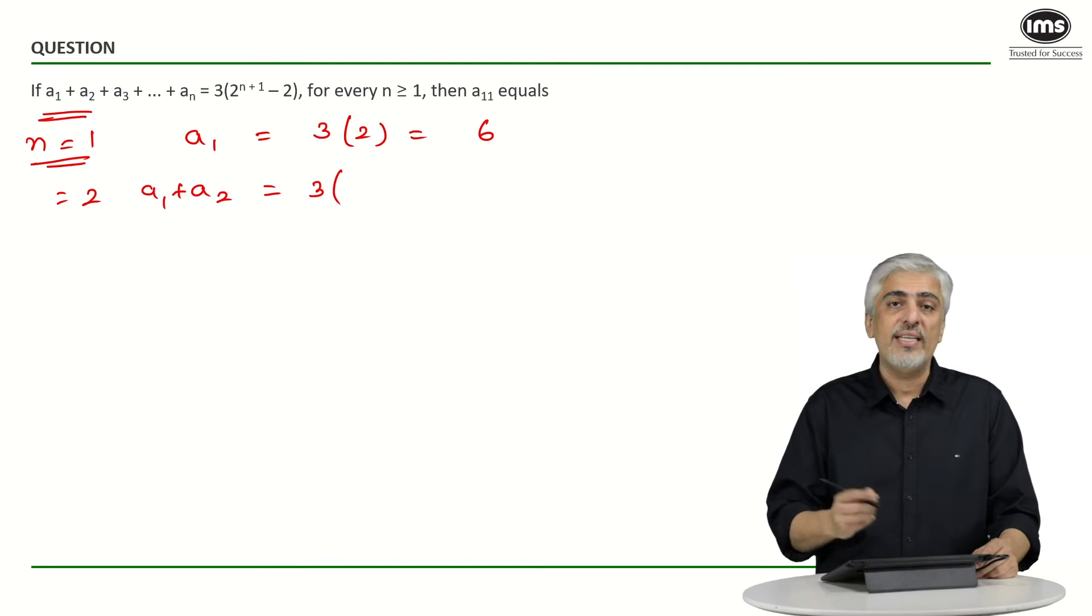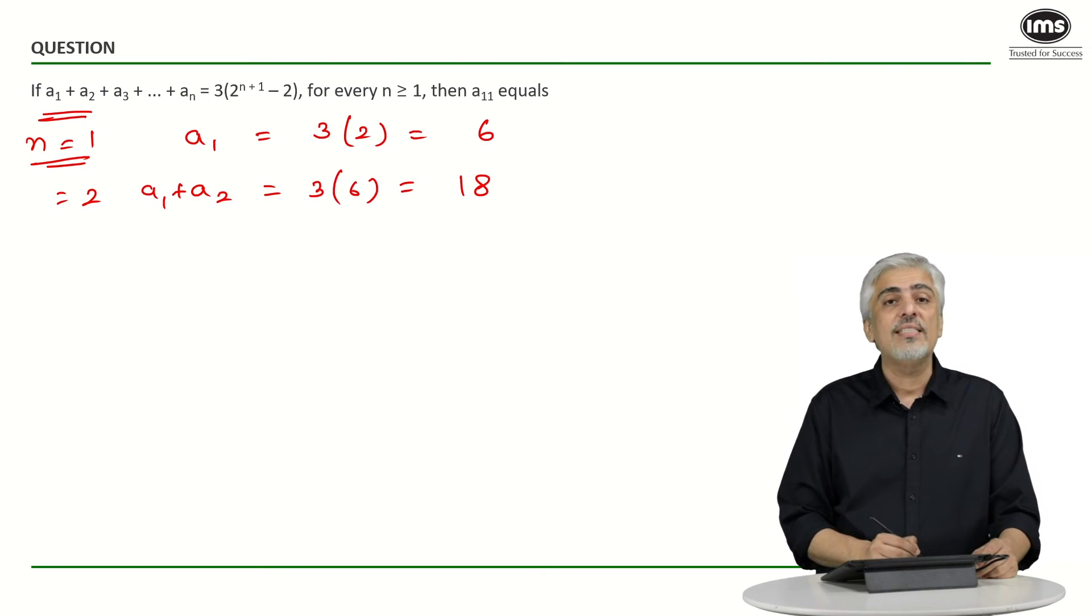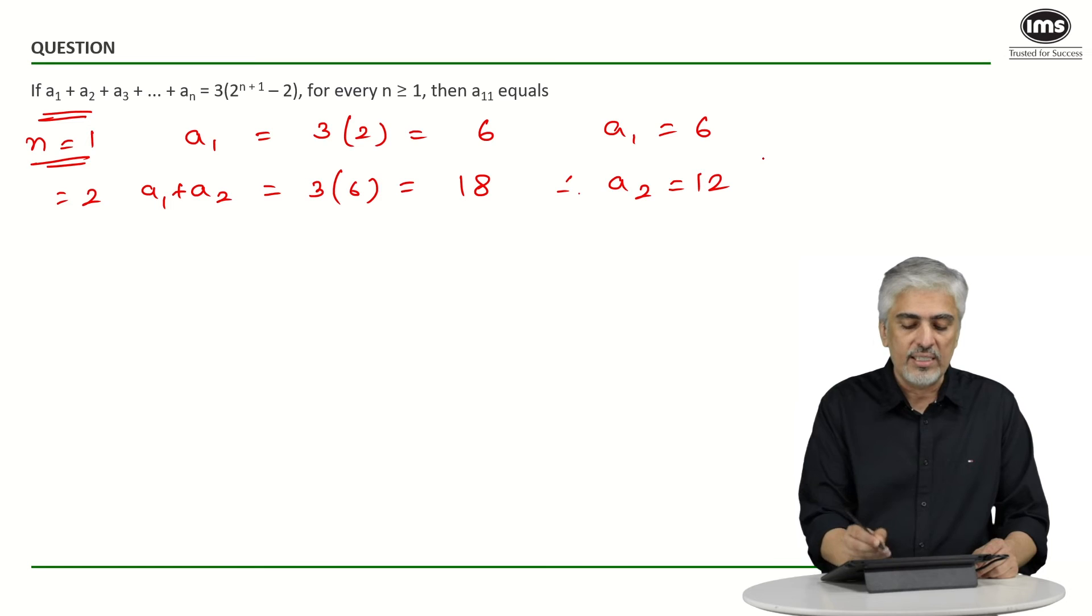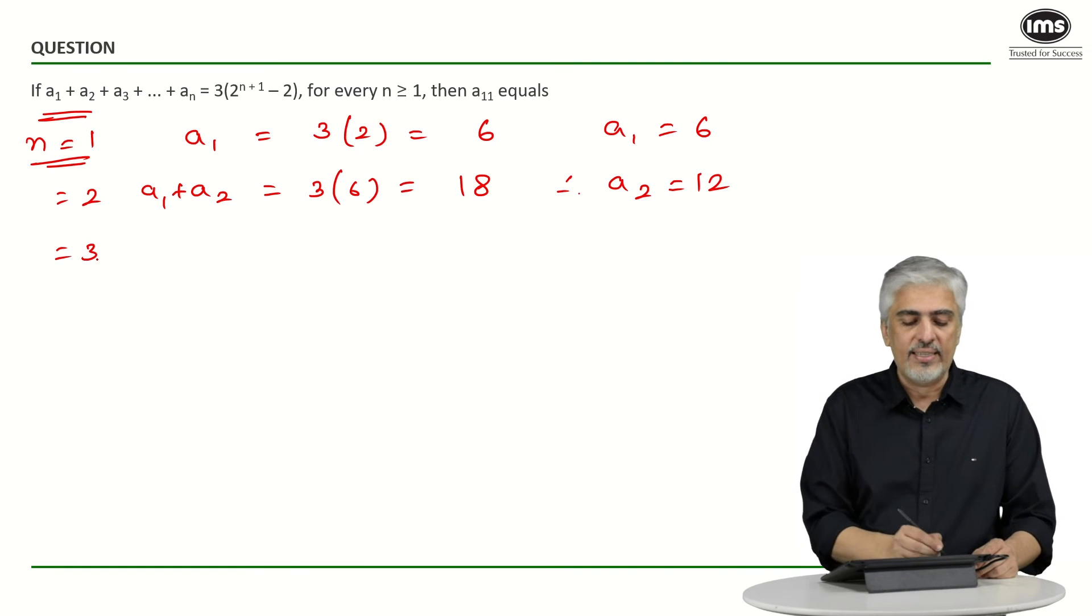So I will get a₁ + a₂ is equal to 3 into 2 raise to 2 plus 1, 3. 2 raise to 3 is 8, 8 minus 2 is 6. So I have got a₁ + a₂ is 18 and therefore a₂ will be 12, a₁ we knew was 6. So a₂ becomes 12. We got that much.